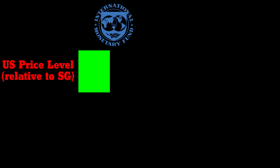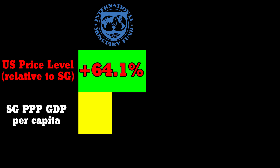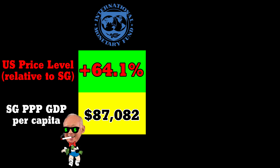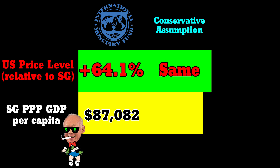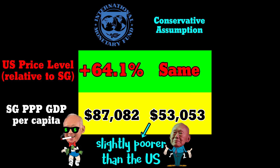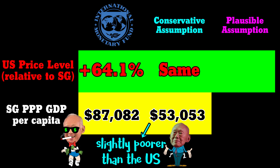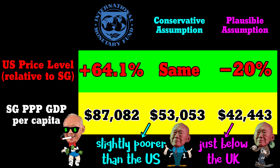The IMF assumes the US is 64% more expensive than Singapore, giving Singapore a PPP GDP per capita of 87k. If we instead make the conservative assumption that the general price level in the US is the same as in Singapore, the figure would be a more believable 53k, which would make Singapore slightly poorer than the US. And if we make the more plausible assumption that the US is 20% cheaper than Singapore, then it would be around 42k — just below the UK.